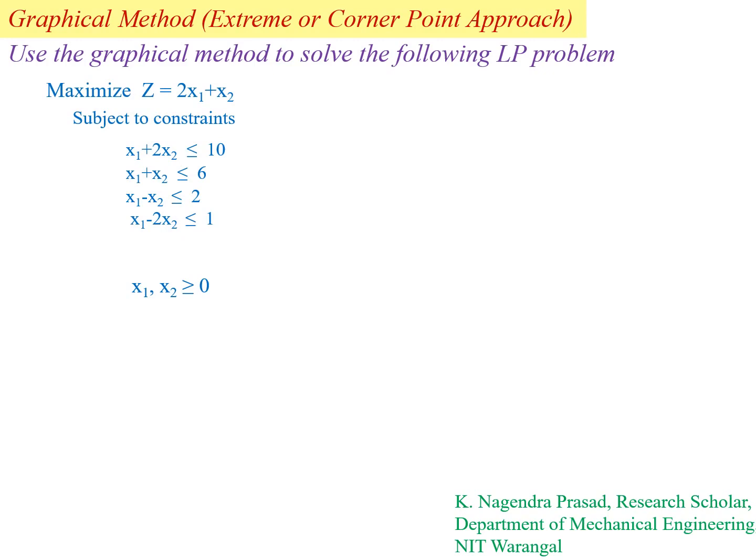Maximize Z equal to 2x1 plus x2, subjected to constraints: x1 plus 2x2 less than or equal to 10, x1 plus x2 less than or equal to 6, x1 minus x2 less than or equal to 2, x1 minus 2x2 less than or equal to 1, and x1, x2 greater than or equal to 0.